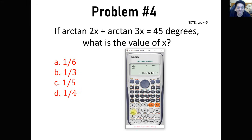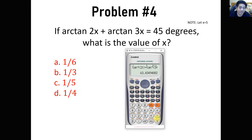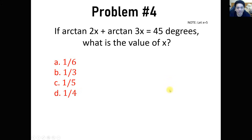Try x equals 1/6 — it gives 45 degrees. Try 1/3 — not 45 degrees. Try 1/5 — gives 52, not 45. Try 1/4 — not 45 degrees. The only value that gives 45 degrees is 1 all over 6. So the answer is letter A, x equals 1/6.